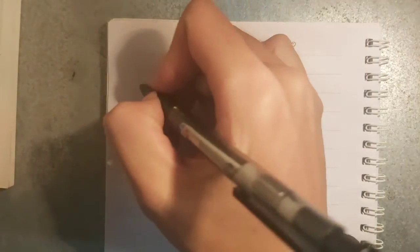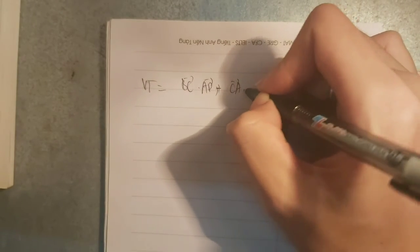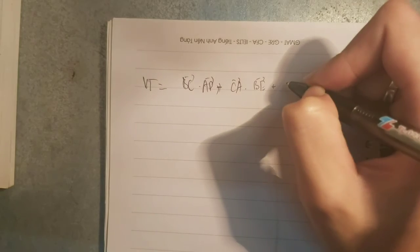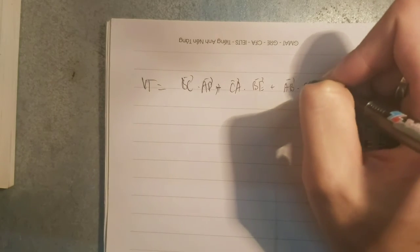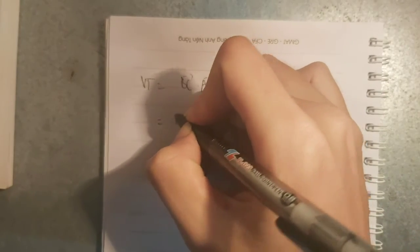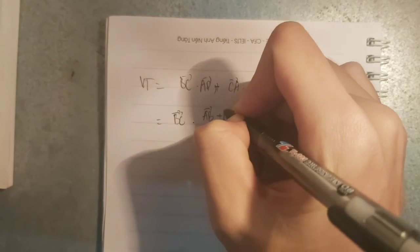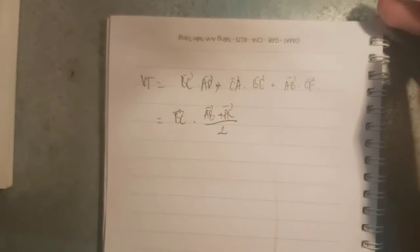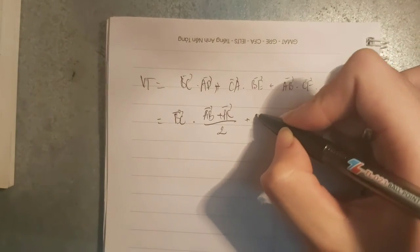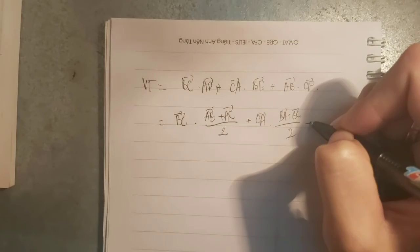Đây anh viết lại vế trái. Vế trái sẽ có BC·AD + CA·BE + AB·CF. Bây giờ chúng ta cần chứng minh vế trái bằng 0. Đầu tiên đó là BC tách AD... vì AD là trung tuyến, chúng ta sẽ đưa ra ngoài 1/2.